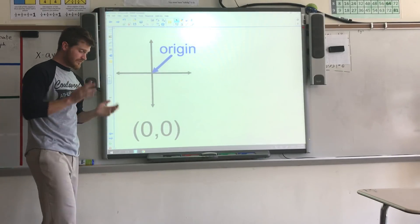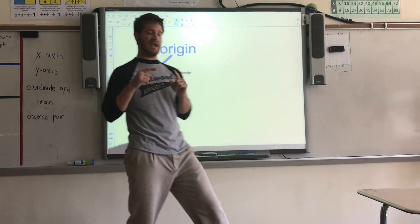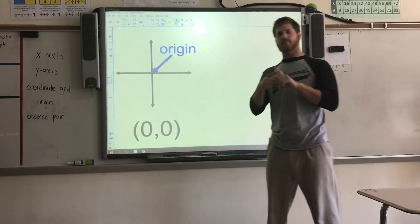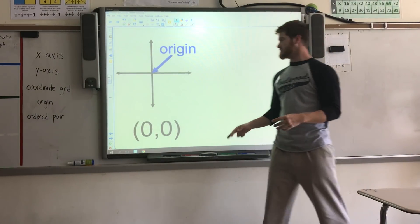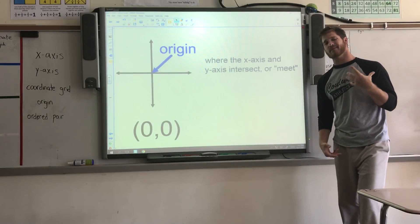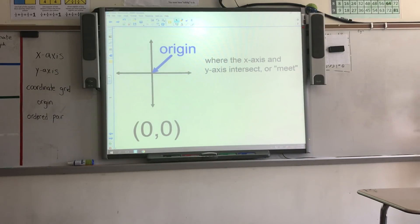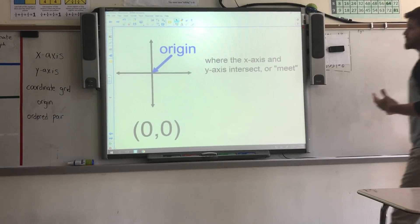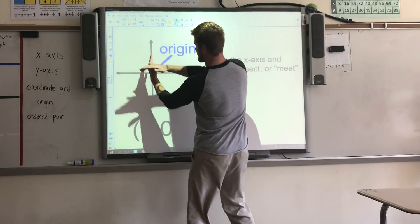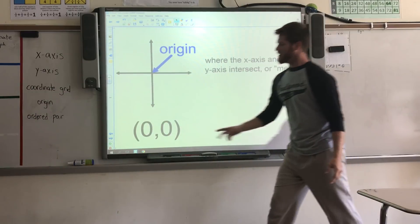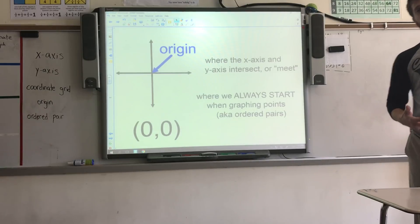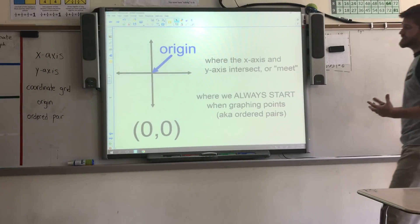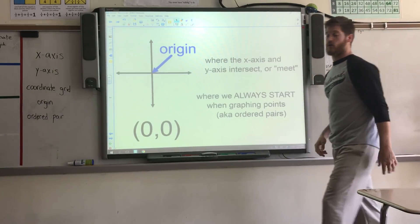We're going to get into that in a little bit, talking about ordered pairs. The very middle, where the x and the y meet or intersect, is what we call the origin — that is going to be our starting point. When we talk about the origin, we're talking about where the x-axis and the y-axis intersect. This is always represented as zero comma zero, and is always our starting point when we graph points or ordered pairs on a coordinate grid.